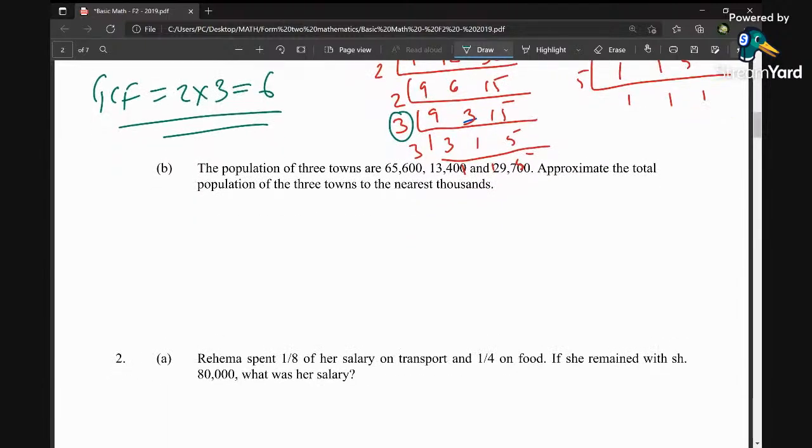Question number 1b: The population of three towns are 65,600, 13,400, and 29,700. Approximate the total population of the three towns to the nearest thousands.